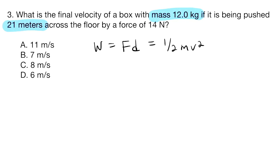So mass was 12 kilograms. The distance was 21 meters. And our force was 14 newtons. They're asking us, what is the final velocity? So force was 14, distance was 21, the mass was 12, and we don't know what the velocity is. So that's our problem set up.